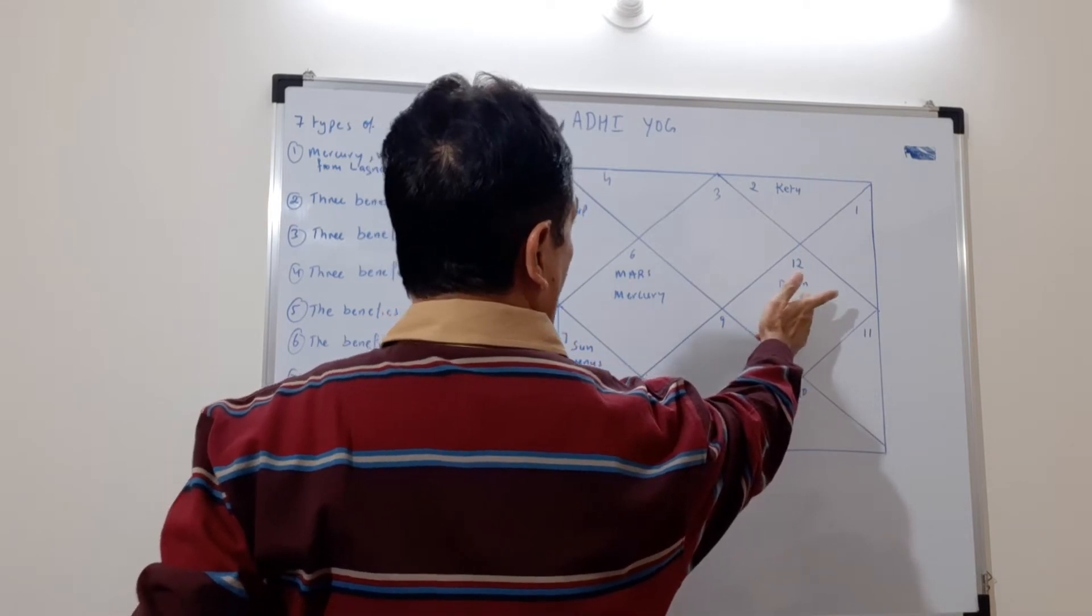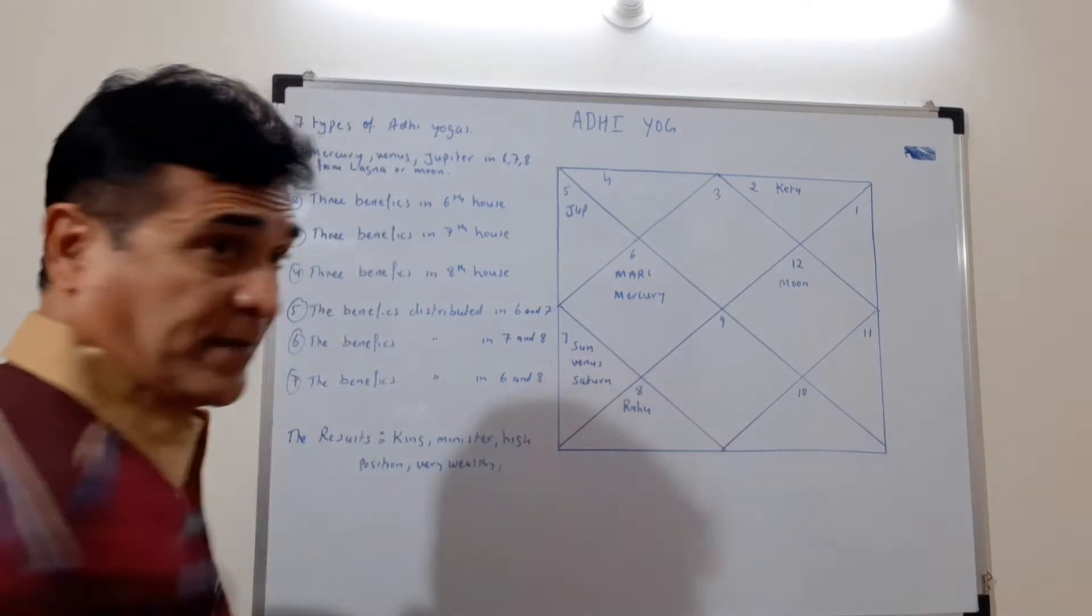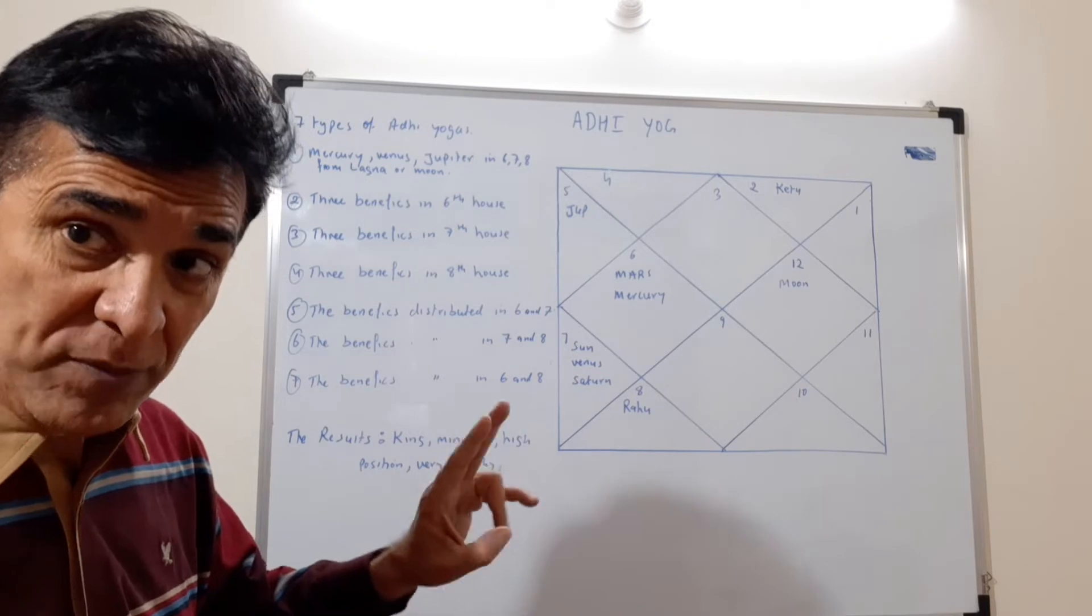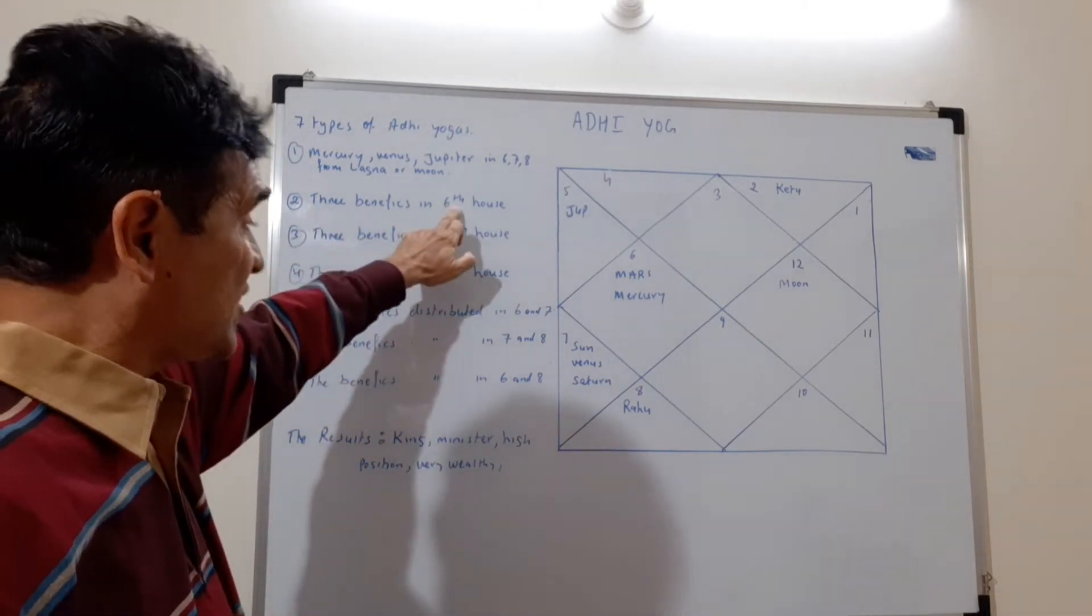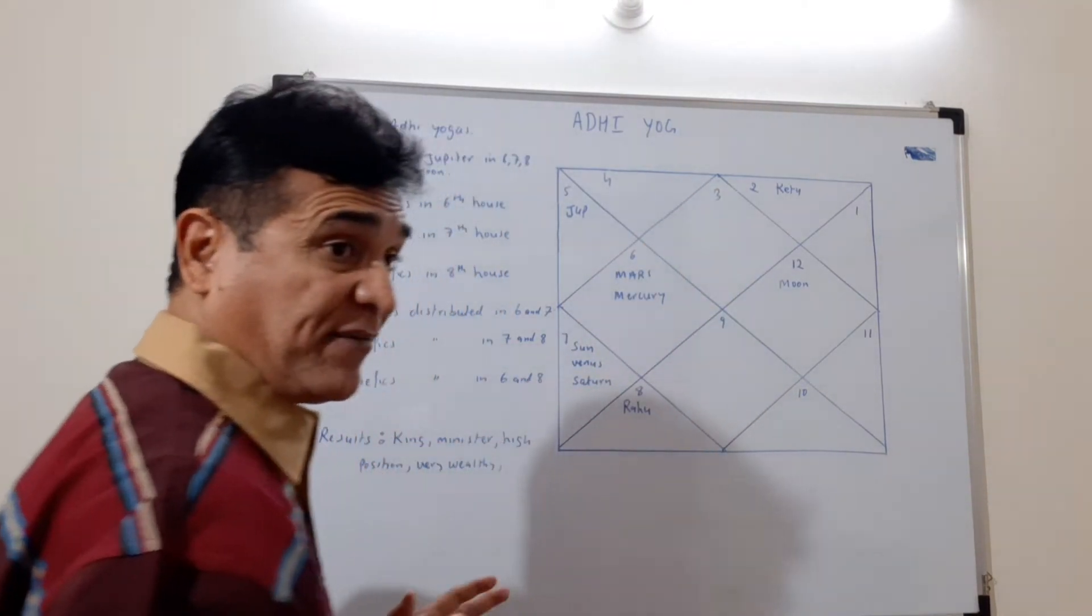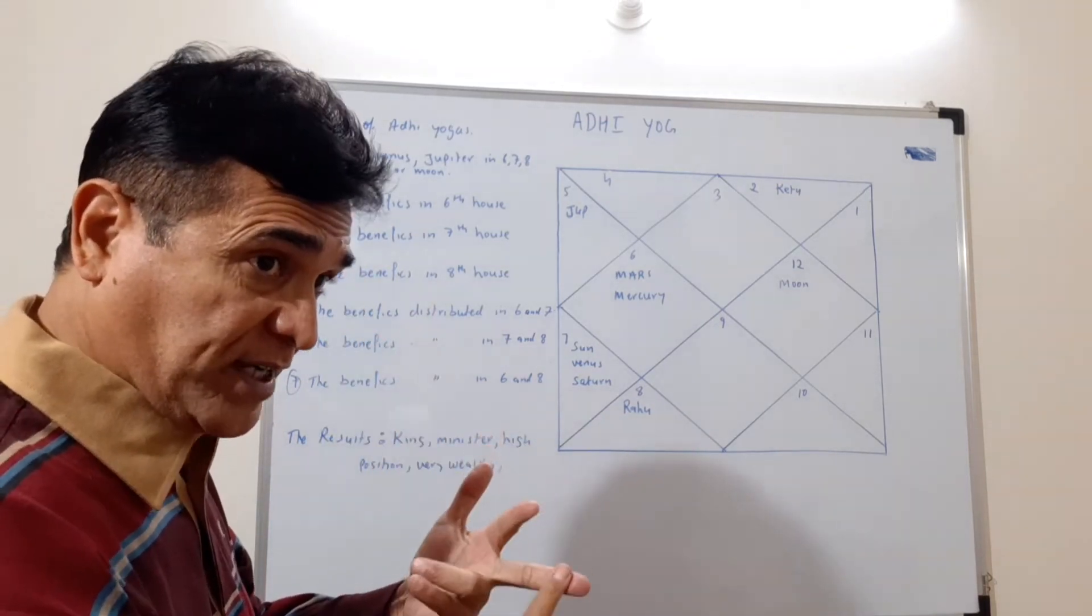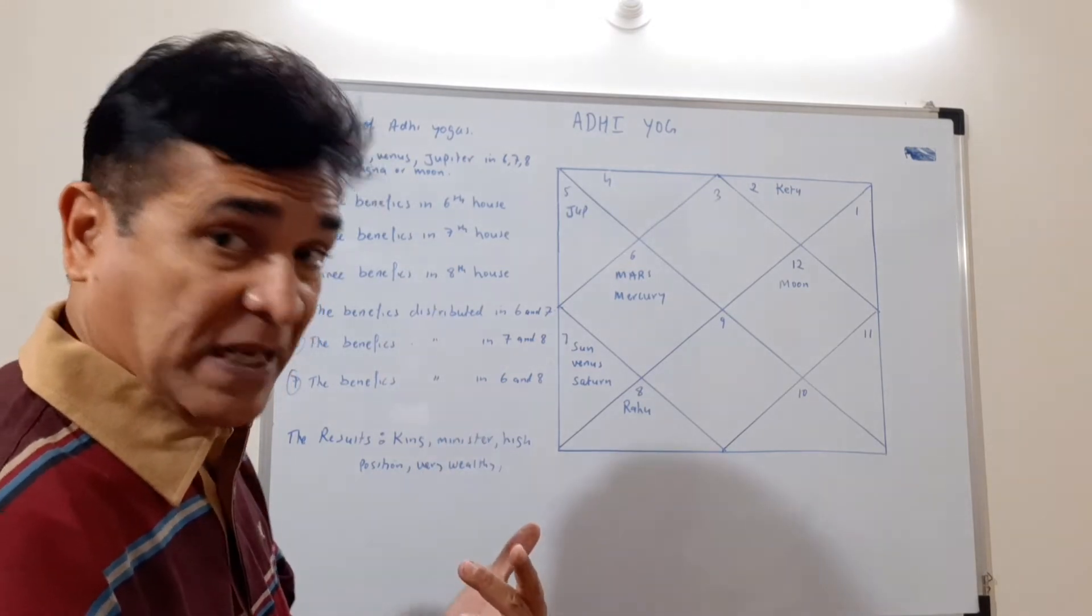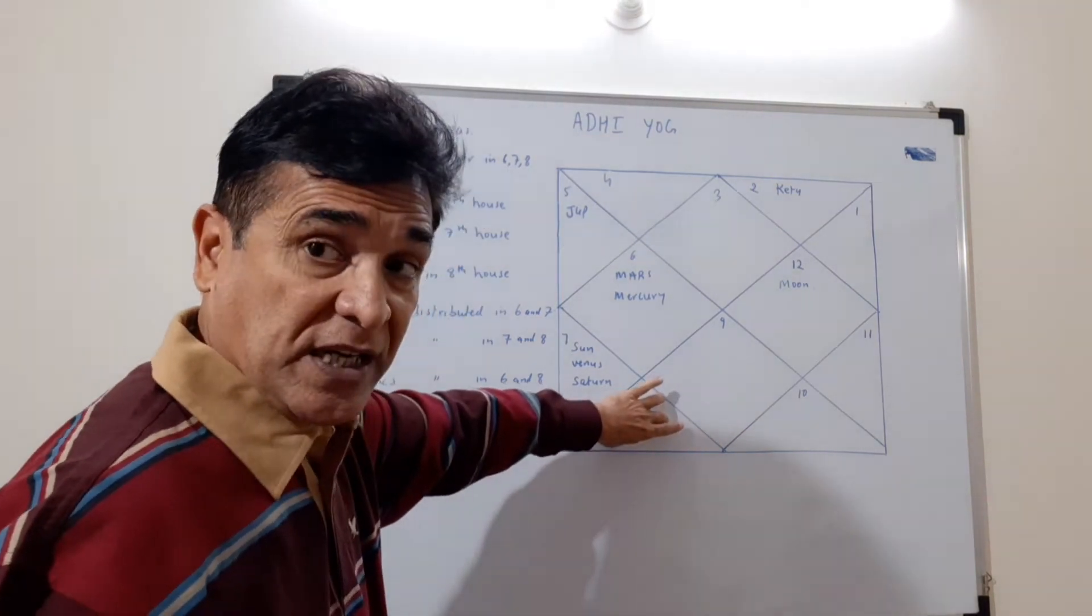Right. The second type of Adhi Yoga forms when three benefic planets are in the sixth house. So from Lagna if there are three benefics - what are the benefic planets? Moon, Venus, Jupiter, Mercury - these are the benefic planets. If they are in the sixth house either from Lagna or from Moon, wherever your Moon is positioned in your chart.